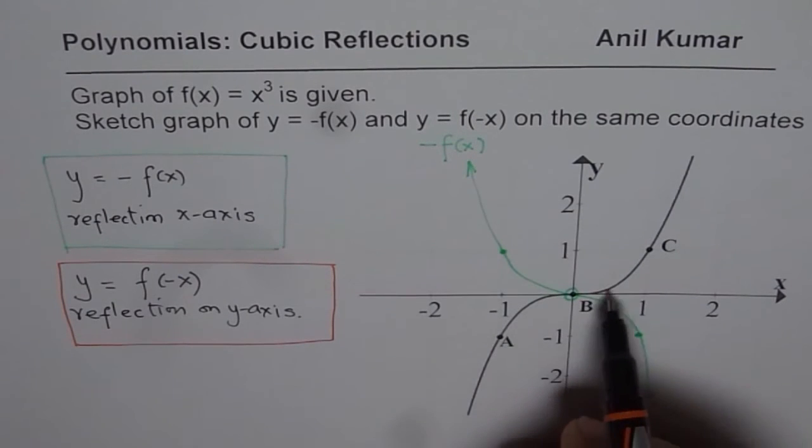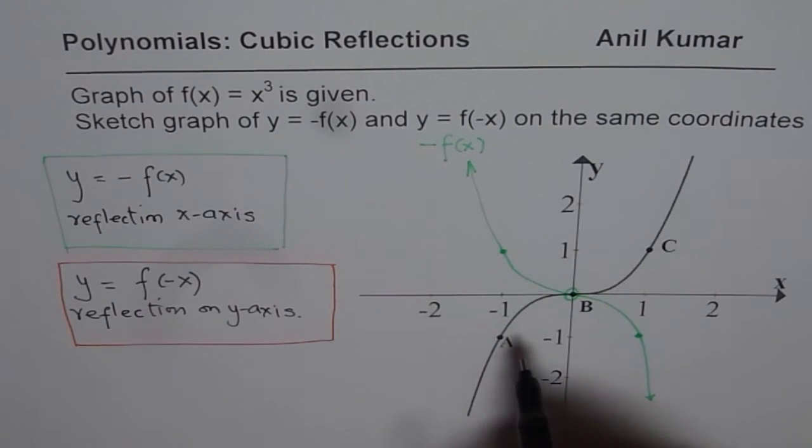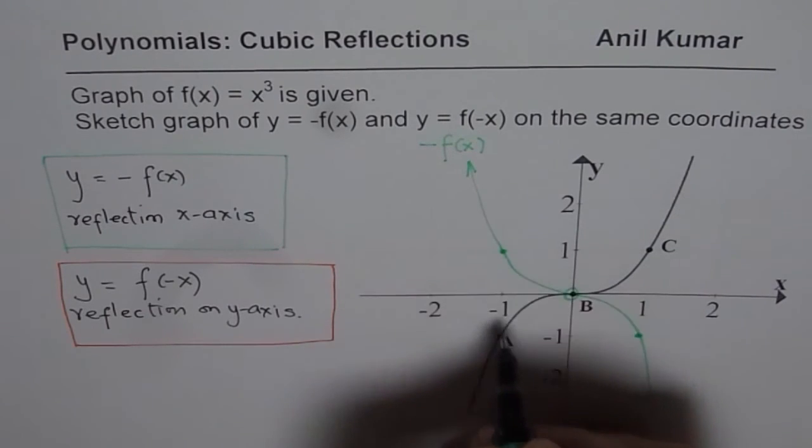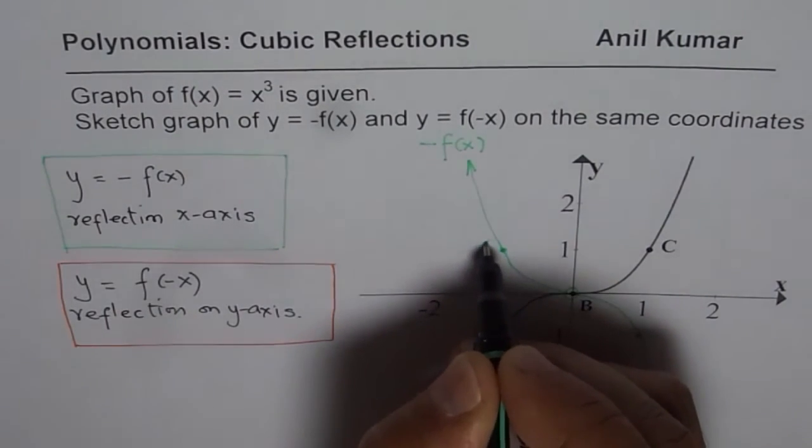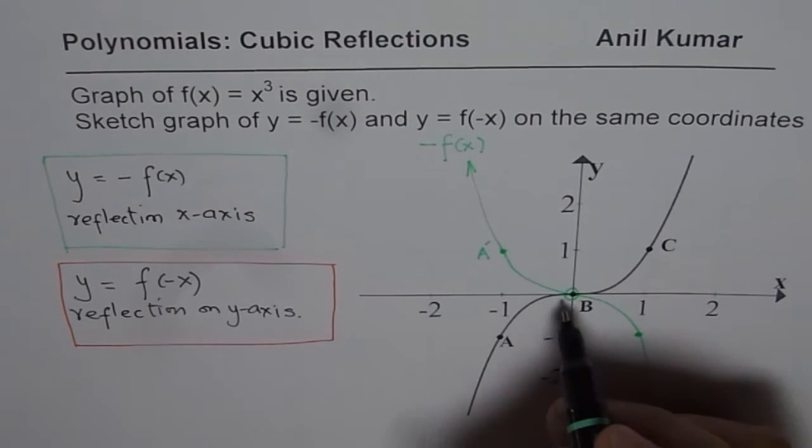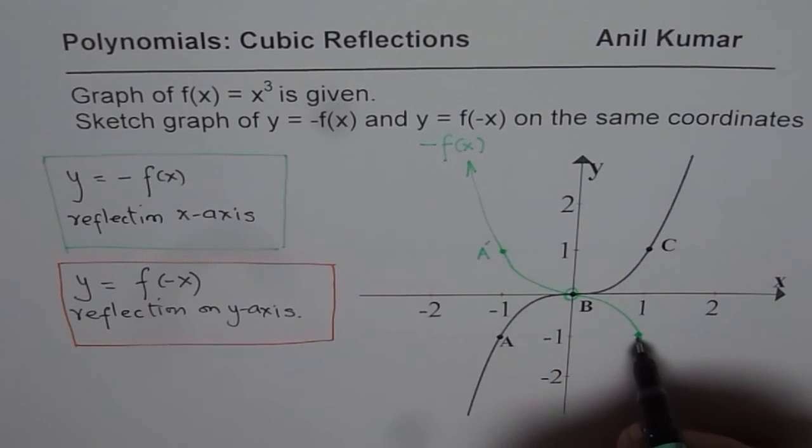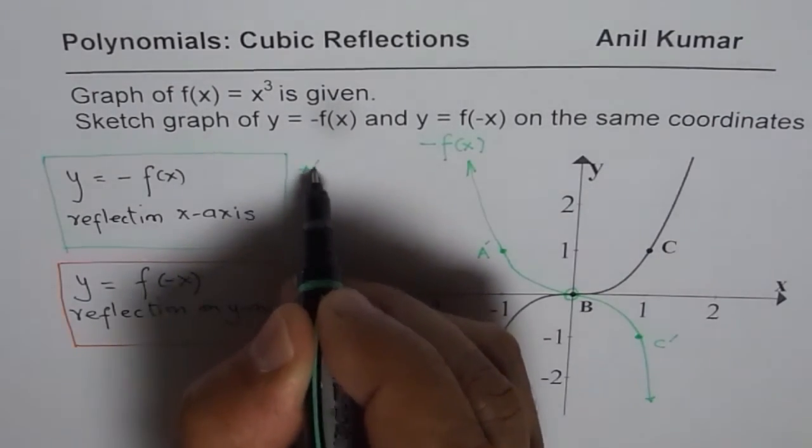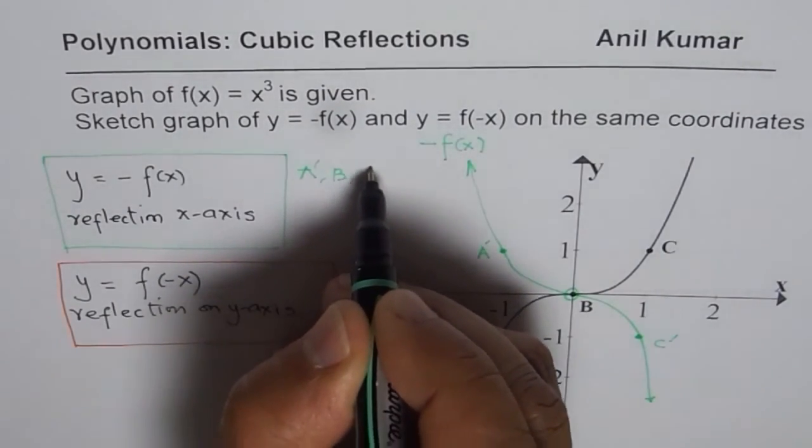So we will consider again these three points. Now, if I am reflecting it on y-axis, this point A, let me label previous points. Earlier, the points were this A got reflected here, A dash. And B remains same place. C came here. So we will call this as C dash. So we had the points A dash, B and C dash.